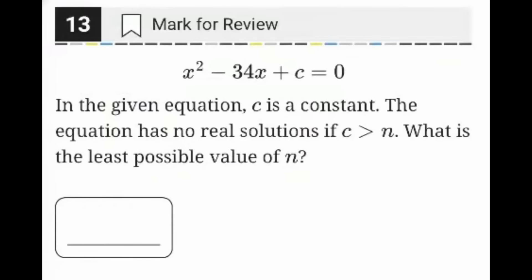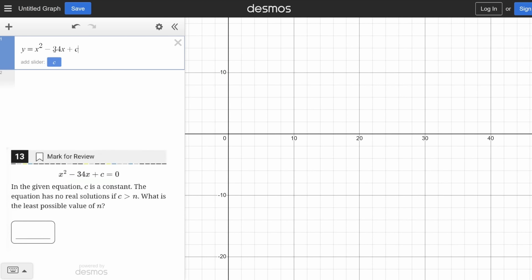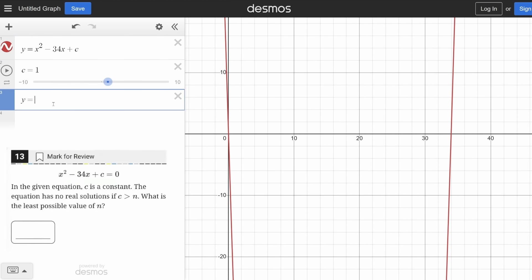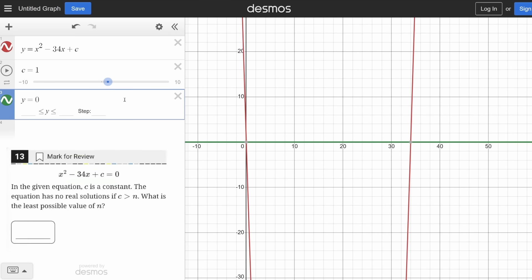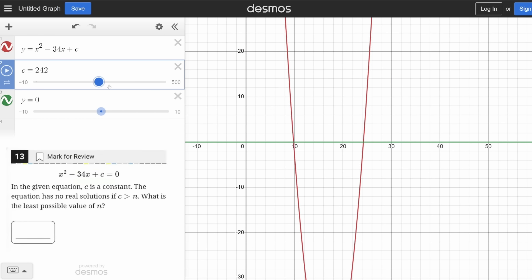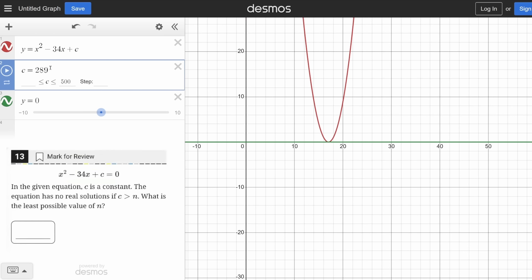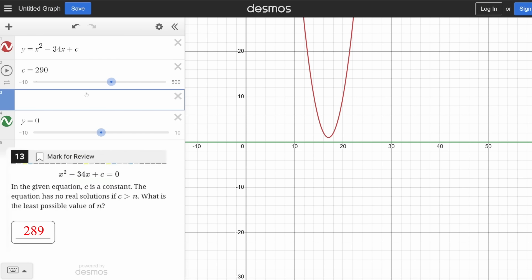In this problem, we're given a quadratic equal to 0 and told the equation has no real solutions when c is greater than n. The easiest way to think about no solutions is with a system of equations, so we want to do what we did earlier in the video and split each side into its own equation. Now, the question becomes simpler. It's asking, what does c need to be greater than for our quadratic to be above the x-axis? So we drag our c until the quadratic reaches the x-axis and see that any value above 289 is above the x-axis. Therefore, 289 is our answer.